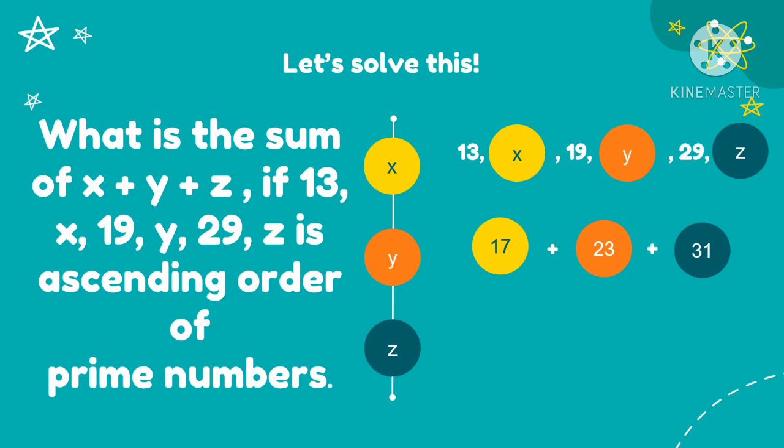Then we're going to get the sum of 17, 23, and 31. So when we add together 17 plus 23 plus 31, we will get the sum of 71. Therefore, the sum of x plus y plus z is 71.